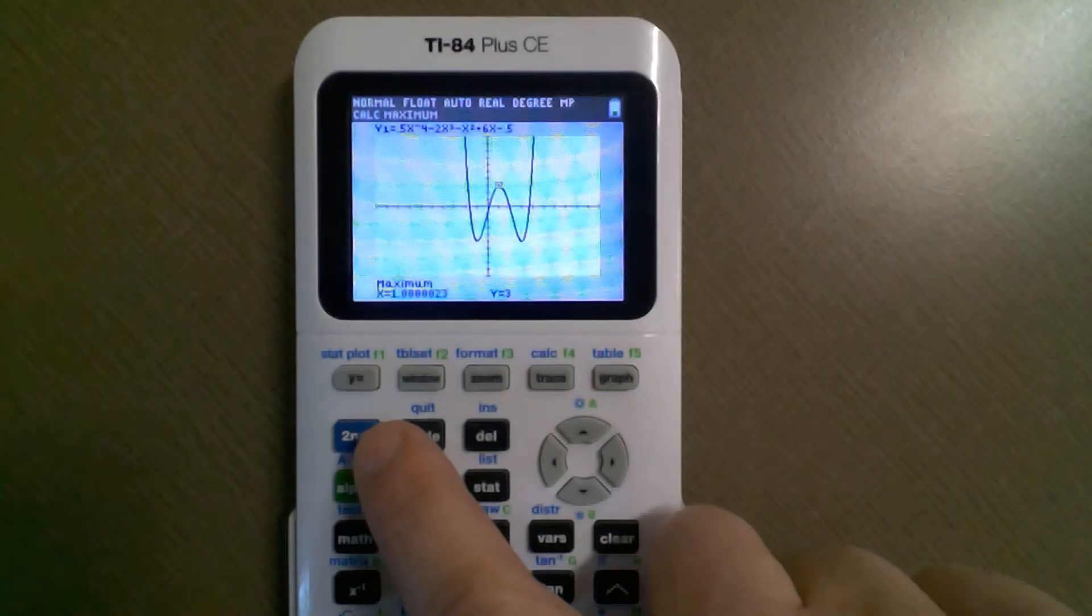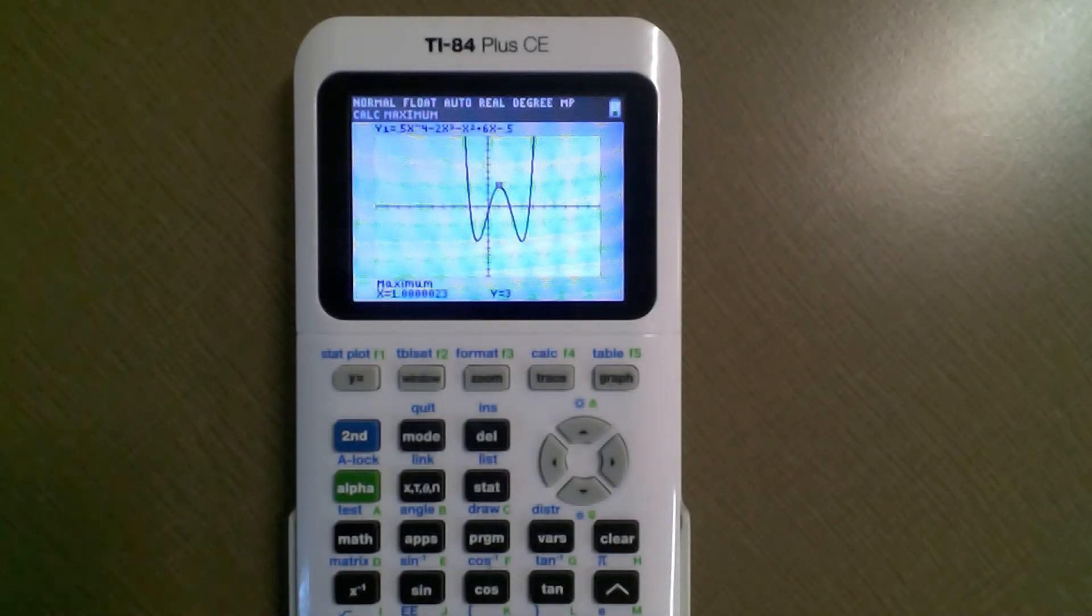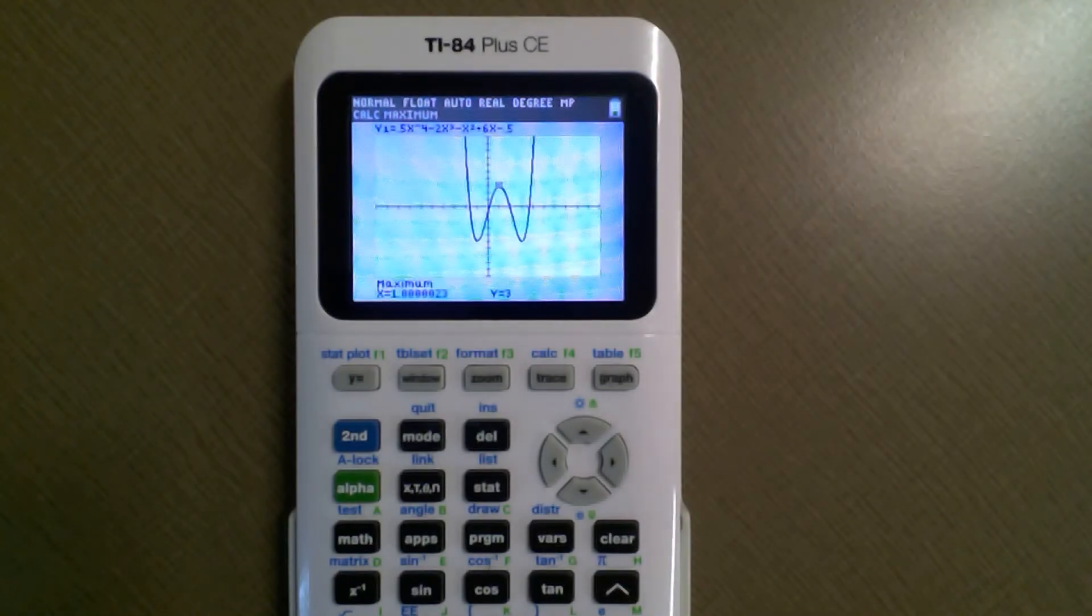So pretty straightforward. You really want to know for maximums and mins, you hit second and then trace and then just make sure you set that left and right bound so the maximum is right in between those.